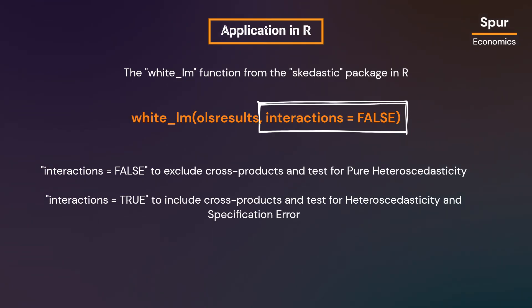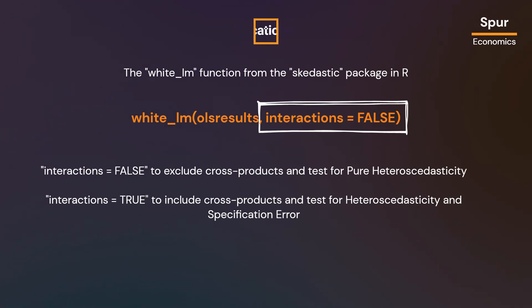The option 'interactions' can be used to specify whether to include cross products in the test. Specifying interactions=FALSE excludes the cross products, making it a test for pure heteroscedasticity. Specifying interactions=TRUE includes cross products in the auxiliary regression, meaning the test also checks for specification error.